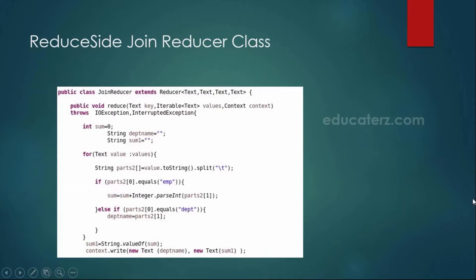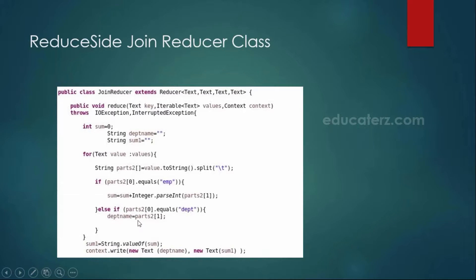Integer.parseInt is used because the value is a text string, and if you want to convert the string to an integer, you must use Integer.parseInt. Similarly, we check whether the value is equal to department. Then the department name is the second field — that means part[1]. We emit that department name, and finally with context.write we specify the department name and the sum.